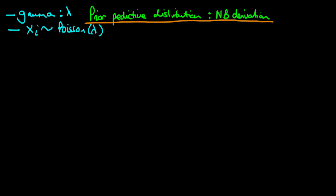What we're actually going to find in this example is that the prior predicted distribution is itself something which is known as a negative binomial distribution. So what we're trying to derive here is the prior probability distribution of a single observation x.